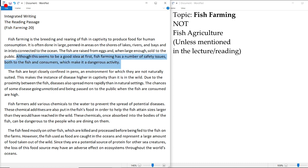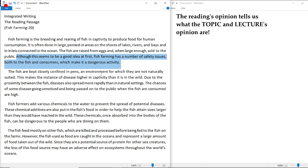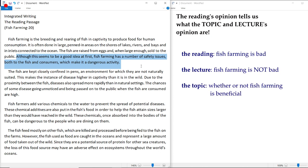Now we're going to start reading from the last sentence of the introduction paragraph as always, because this is where the reading passage's opinion is revealed to us. Now once we are aware of the reading passage's opinion, we should also know basically what the topic and lecture's opinion both are. Okay, so let's read the sentence: Although this seems to be a good idea at first, fish farming has a number of safety issues both to the fish and consumers, which make it a dangerous activity.